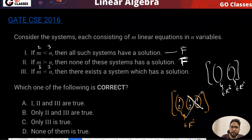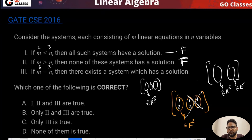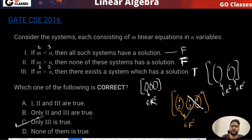If m equals n, then there is a system which has the solution. If you have a 3×3 matrix, three columns in R3, then yes, there is a system for which you can have a solution. So that's why this is true, and C is the correct answer.